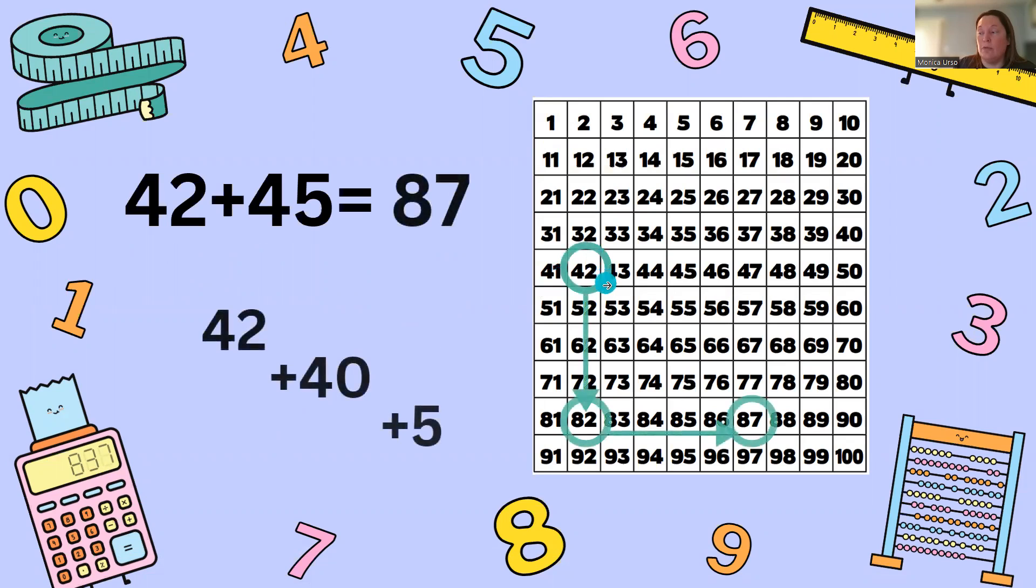So we have 42. We move down four rows to add 40 and then we move to the right five places to add our ones. So we have 42 plus 10, 20, 30, 40 plus 5: 1, 2, 3, 4, 5 and we get our answer of 87.